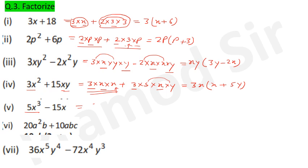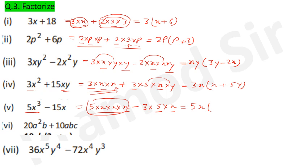Question 5: 5x³ + 15x. Write 5×x×x×x + 3×5×x. Common: 5 and one x = 5x. Left in first term: x² and in second term: 3. Answer: 5x(x² + 3). Questions 6 and 7 you will do yourself.